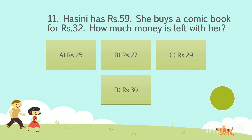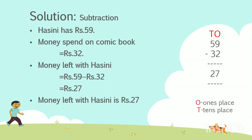Question No. 11: Harsini has Rs. 59. She buys a comic book for Rs. 32. How much money is left with her? Option A: 25 rupees. Option B: 27 rupees. Option C: 29 rupees. Option D: 30 rupees. Your time starts now. The answer is Option B: 27 rupees. Solution: Harsini has Rs. 59. Money spent on comic book is Rs. 32. We have to find out the money left with Harsini. So the solution is subtraction: 59 minus 32. After subtracting, we get Rs. 27. So money left with Harsini is Rs. 27.